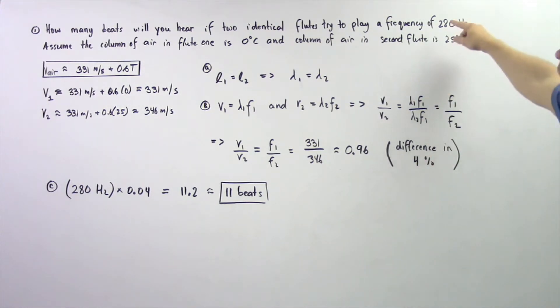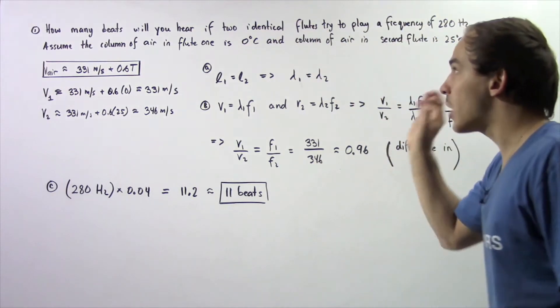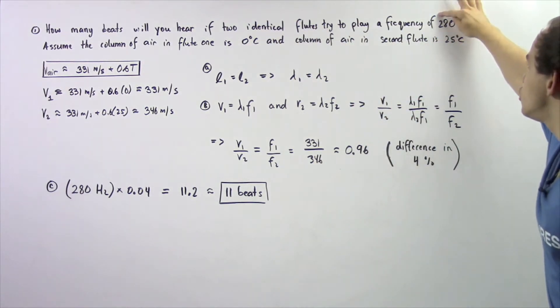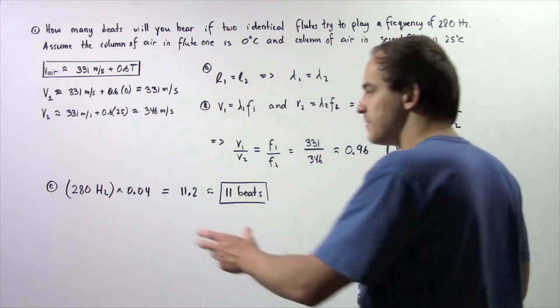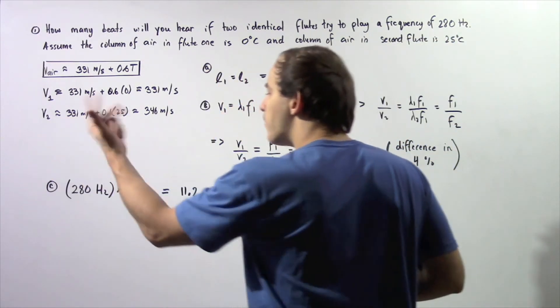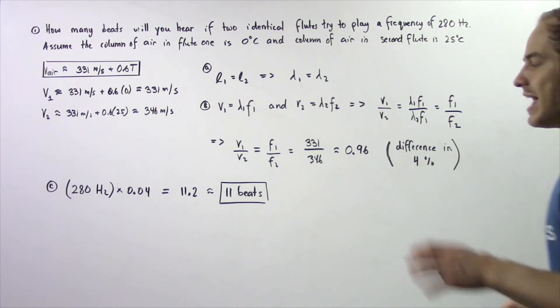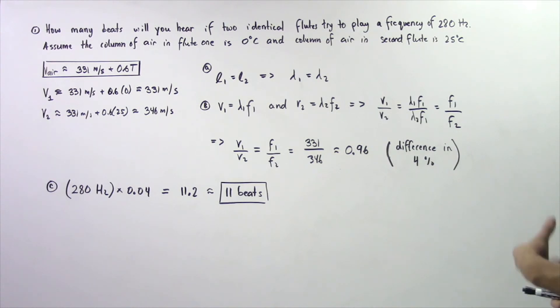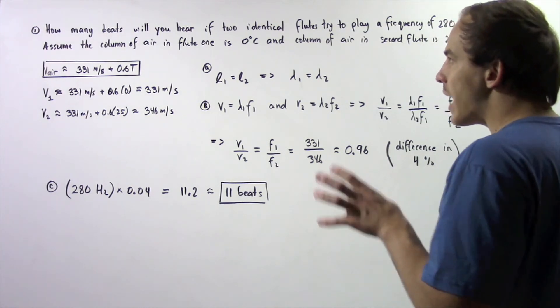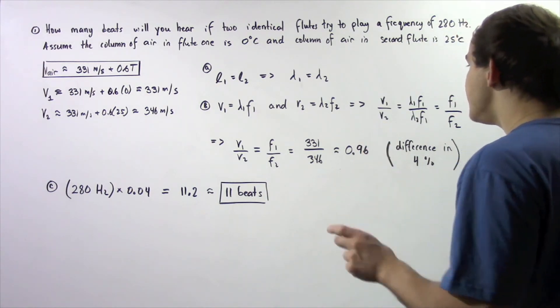So, because the frequency that the two identical flutes try to play is equal to 280 hertz, to find the actual beat frequency, we take 280 hertz and multiply by 0.04 and we get 11.2. So that means the beat frequency is about 11 beats. So every single second, we will hear 11 beats.